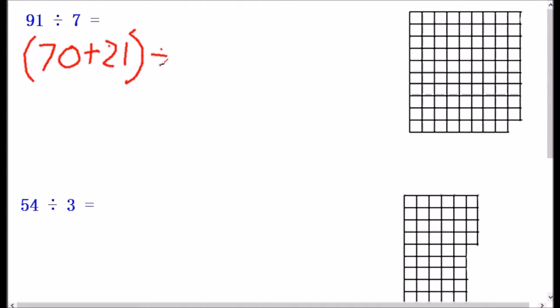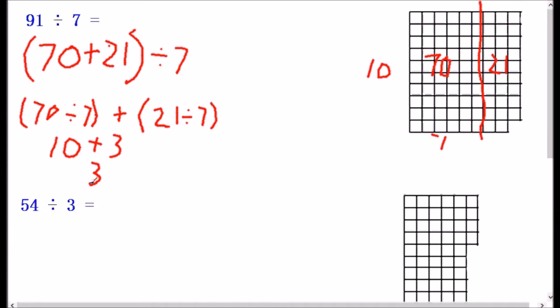Dividing it by 7. So 70 divided by 7 is 10, plus 21 divided by 7 is 3. And so we get a total of 13. So 91, remember our original problem, 91 divided by 7 would be 13.